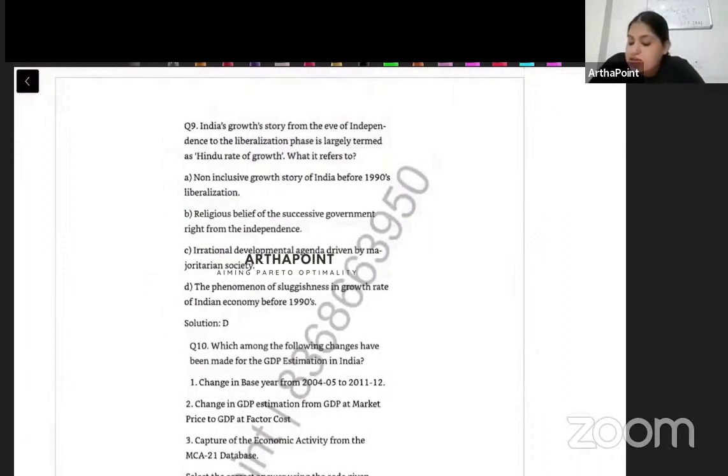Okay, let us come to the next question. India's growth story from the eve of independence to liberalization phase is largely termed at Hindu rate of growth. What it refers to? So Hindu rate of growth basically means that India was not able to grow at a very high rate. If you read my lecture on the five-year plan, you will understand that there were multiple issues - sometimes drought, sometimes famine, sometimes war with China, with Pakistan. Because there were so many issues, that is the reason why India was not able to grow. Growth rate was very low.